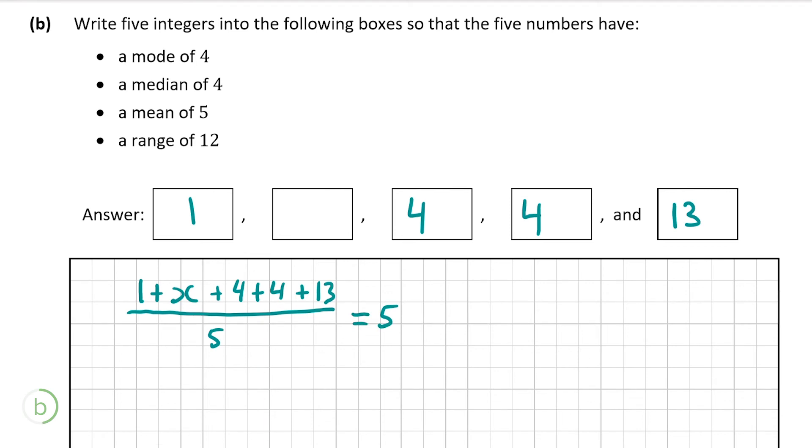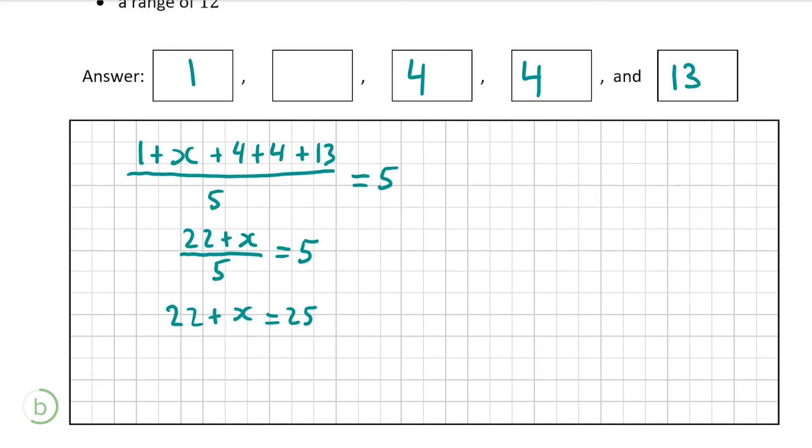So the numerator of the fraction, 1 plus 4 plus 4 plus 13 plus x, will give us 22 plus x divided by 5 is equal to 5. Multiplying both sides of the equation by 5 we get 22 plus x is equal to 25. Now I'm going to minus 22 from both sides to give us the x on its own, and then we get x is equal to 25 minus 22 which is x is equal to 3. So the last number that we were looking for is 3.